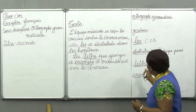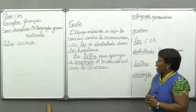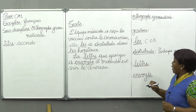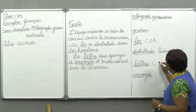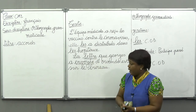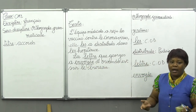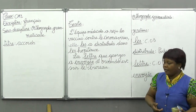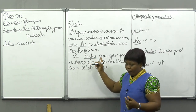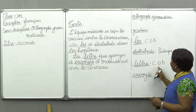Nous avons souligné « lettre » en deux traits. Pourquoi ? Parce que nous avons le complément d'objet direct. « Lettre » devient un complément d'objet direct. Georges a envoyé quoi ? Quand on pose la question « quoi », c'est pour trouver le complément d'objet direct. Georges a envoyé la lettre. C'est pourquoi on a souligné « lettre » en deux traits.